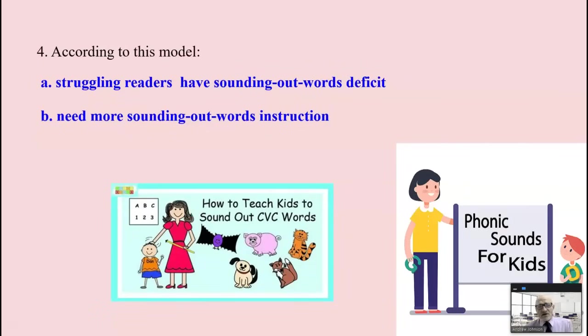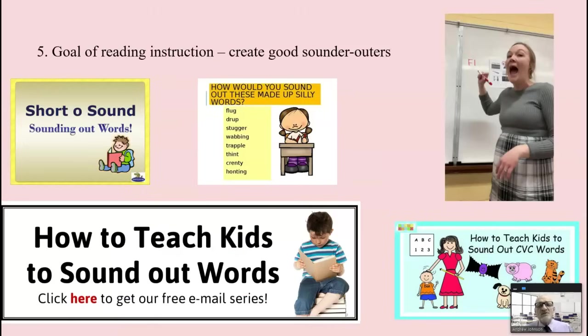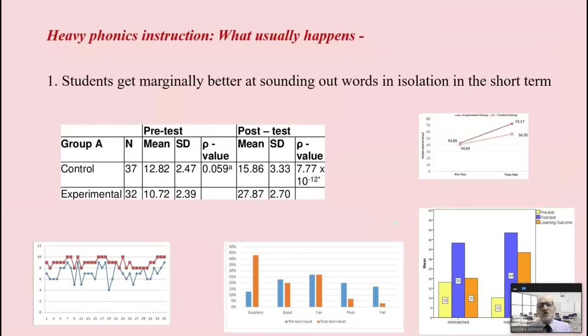According to this model, struggling readers have sounding out word deficits. We want to make them better sounder-outers. So a struggling reader simply needs more sounding-out word instructions, or so says the phonological processing model. The goal of reading instruction, according to this model, is to create good sounder-outers, to have children bark at print to respond to stimuli.